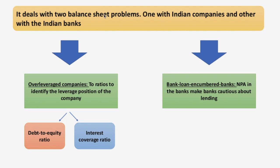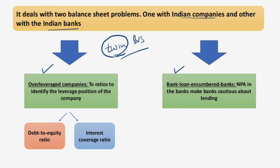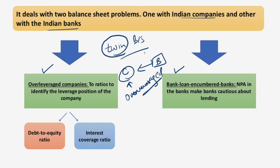The twin balance sheet problem deals with two problems — one related to Indian companies and the other with Indian banks. First, it checks whether the company is over-leveraged. Second, it checks how many NPAs are there in the bank's balance sheet. Corporations expand during the boom period by borrowing from banks, making them over-leveraged entities. When they default on their debts, bank balance sheets become impaired.